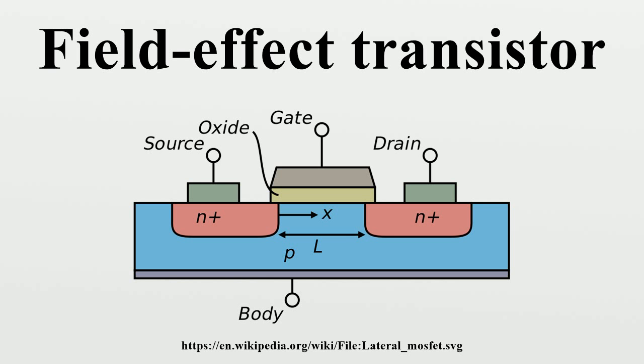The gate terminal may be thought of as controlling the opening and closing of a physical gate. This gate permits electrons to flow through or blocks their passage by creating or eliminating a channel between the source and drain.